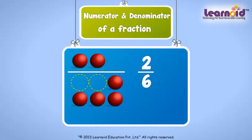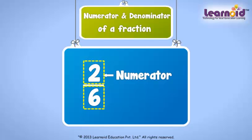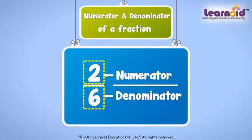The number on top of the line is called the numerator. The number at the bottom of the line is called the denominator.